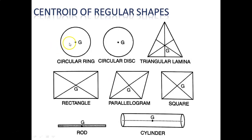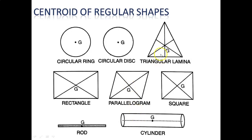If you look at the center of the shape, these are the parts of the symbol. The symbol marks the point of the center of gravity. If you see a parallelogram, you can see its center of gravity. If you look at a triangular laminate, you can see the center point from its three sides.